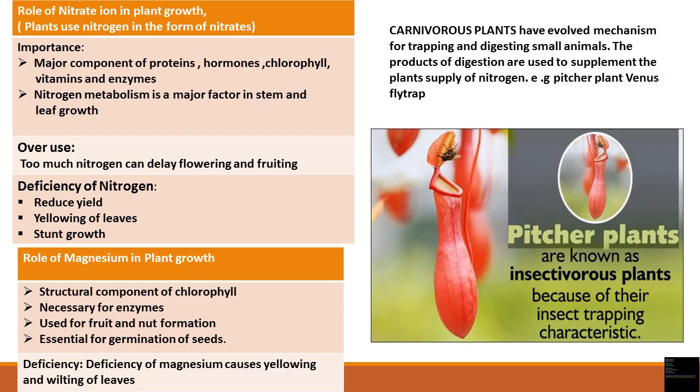Now we will discuss the role of nitrate and iron in plant growth. Plants do not use nitrogen in the form of nitrogen gas — they use it in the form of nitrates. Although nitrogen is present in the atmosphere, plants lack the mechanism or enzymes to fix it directly. Plants absorb nitrate ions from the soil through their roots. Nitrogen is very important as a major component of proteins, hormones, chlorophyll, vitamins, and enzymes. The lush green color of leaves is due to nitrogen because it is required to make chlorophyll. Too much nitrogen can delay flowering and fruiting; deficiency causes reduced yield, yellowing of leaves, and stunted growth.